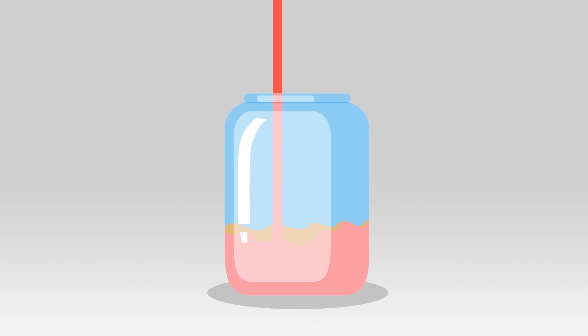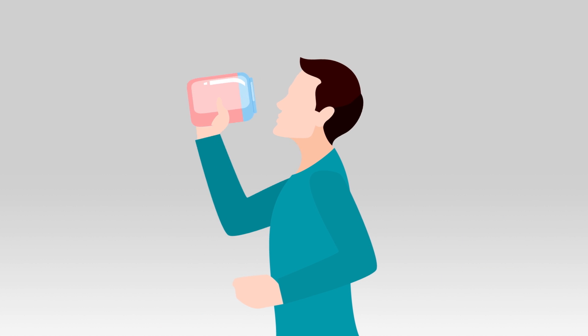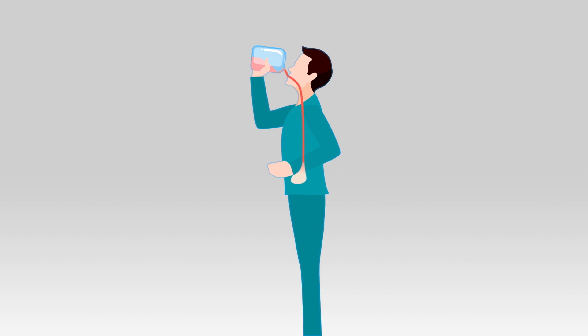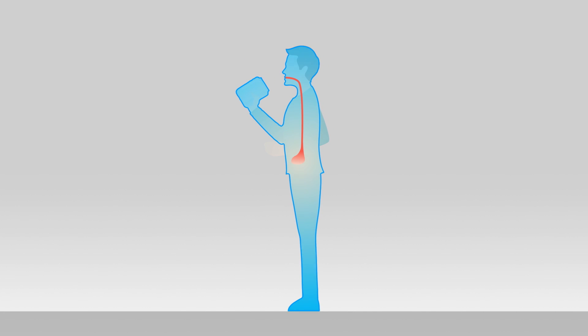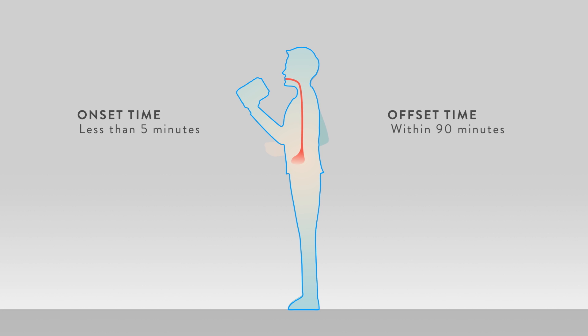Given its unique water-soluble properties, Infuse 2O can be stably formulated into beverages without the use of artificial chemical or physical means to keep the cannabinoids blended in the water base. It also results in a fast onset time of less than 5 minutes and offset within 90 minutes.